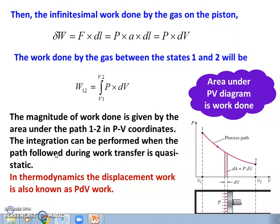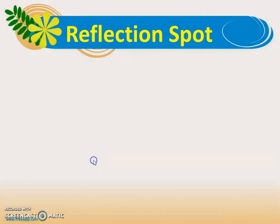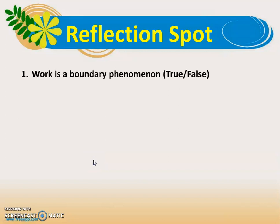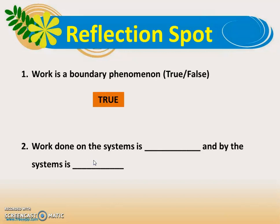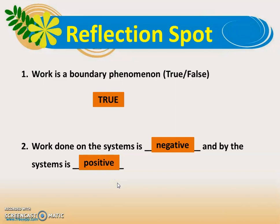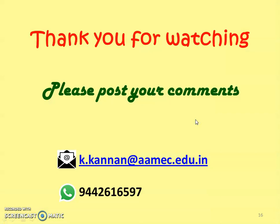Let us review with a few questions. First: work is a boundary phenomenon — is this true or false? If your answer is true, you are correct. Second question: work done on the system is dash, and work done by the system is dash. Work done on the system is negative, and work done by the system is positive. If your answer is negative and positive, you are correct. Thank you for watching. Please post your comments on the video. We will continue with this lecture in the next video lecture. Until then, bye.